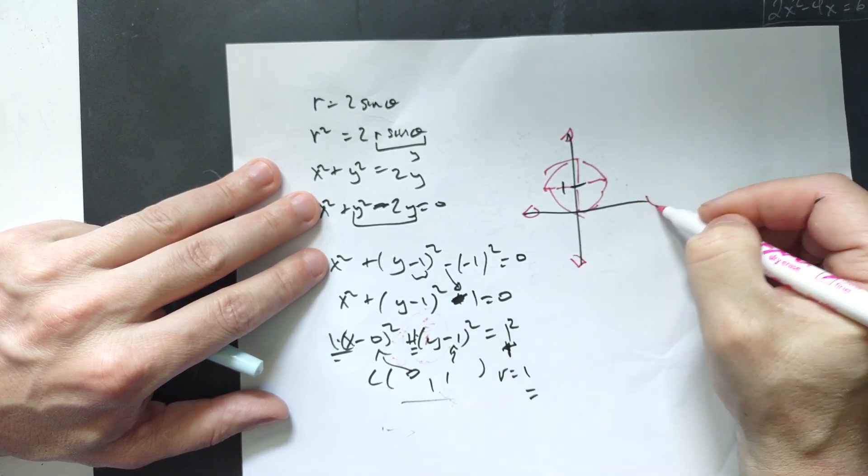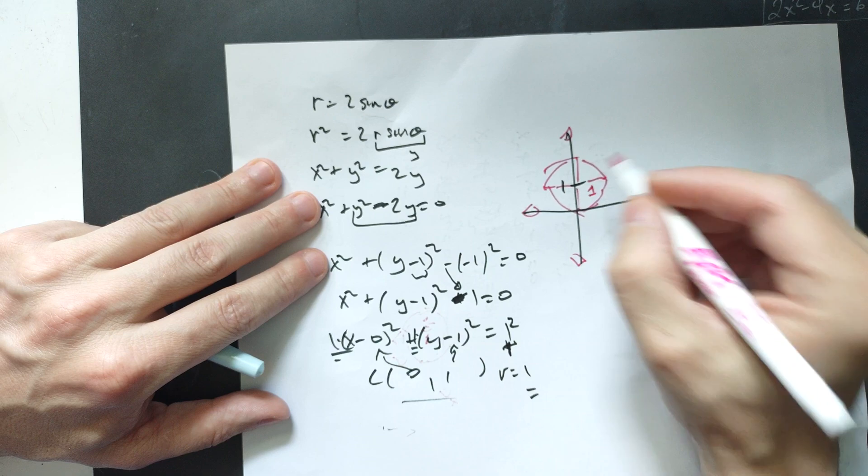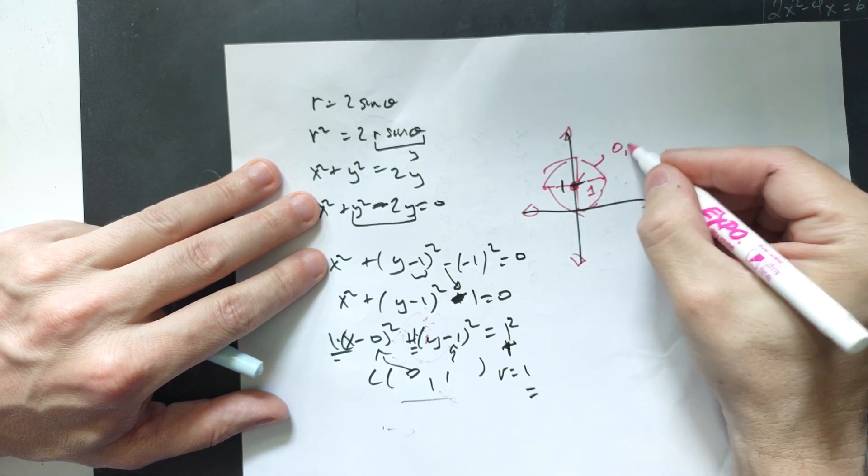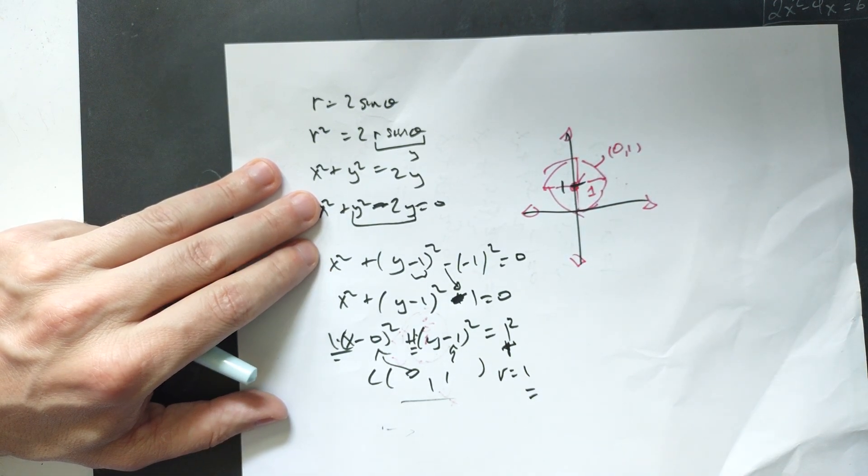The point is that it's a circle right here, and the radius is 1 unit, and this center point is right here, that's equal to 0, 1. Leave a like if it's helpful.